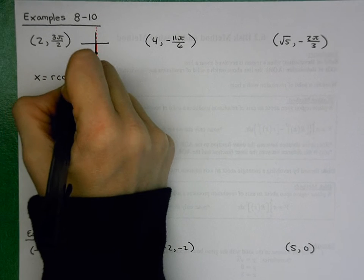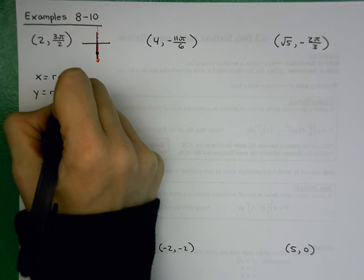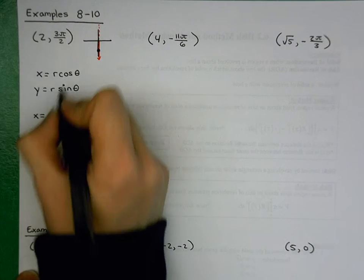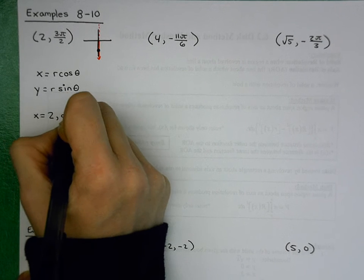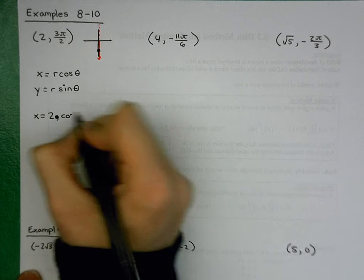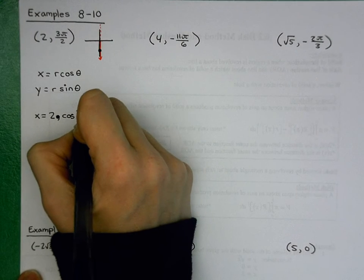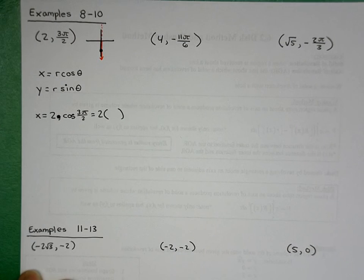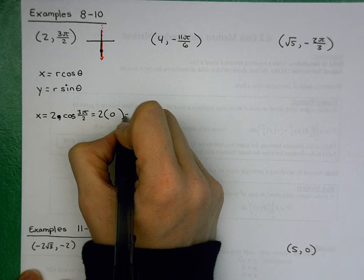For this particular polar coordinate, r is 2. So x = 2·cos(3π/2). Go ahead and take a moment — 2 times what is the cosine of 3π/2? The cosine of 3π/2 is 0, so 2 times 0 is 0.